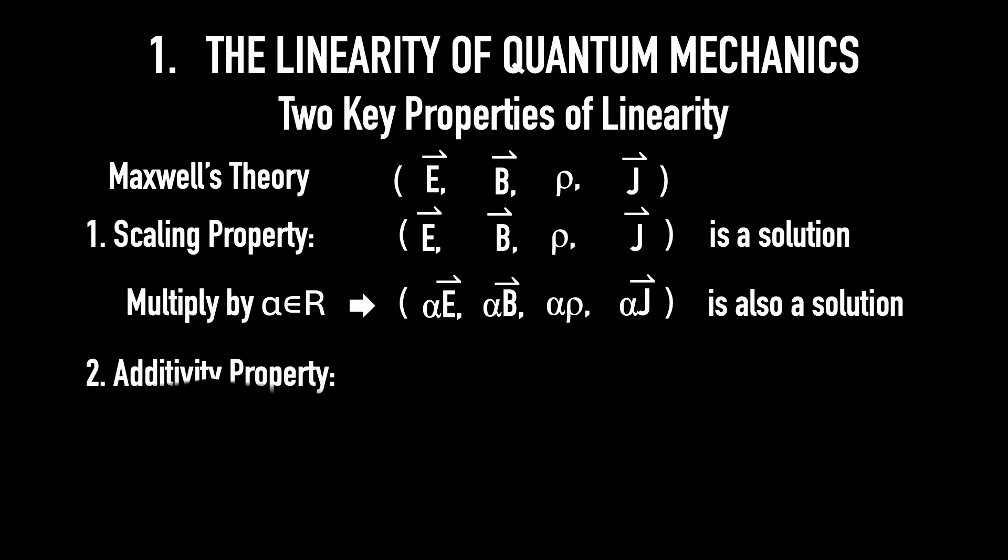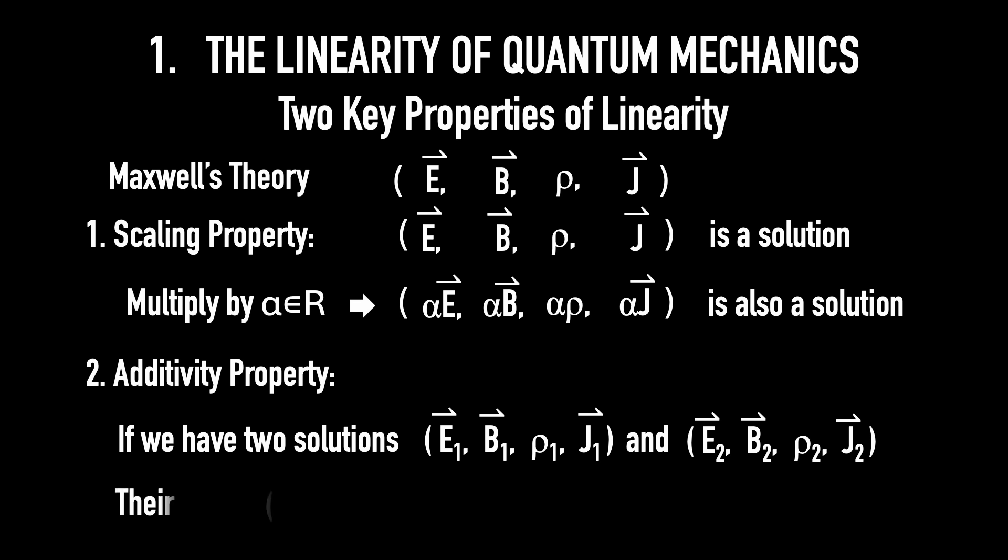Number 2 is the additivity property. If you have two solutions, E1, B1, rho 1, j1, and E2, B2, rho 2, j2, then their sum E1 plus E2, B1 plus B2, rho 1 plus rho 2, and j1 plus j2, is also a valid solution.